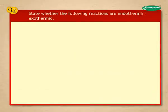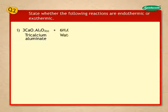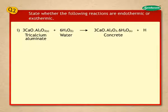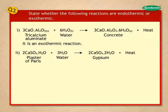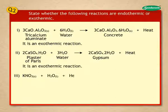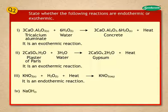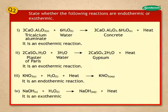State whether the following reactions are endothermic or exothermic. Reaction 1: 3CaSO₄·H₂O → 3CaSO₄·H₂O(s) + heat — it is an exothermic reaction. Reaction 2: 2CaSO₄·H₂O + 3H₂O → 2CaSO₄·2H₂O + heat — it is an exothermic reaction. Reaction 3: KNO₃(s) + H₂O(l) + heat → KNO₃(aq) — it is an exothermic reaction. Reaction 4: NaOH(s) + H₂O(l) → NaOH(aq) + heat — it is an exothermic reaction.